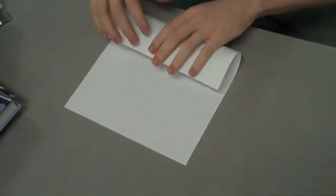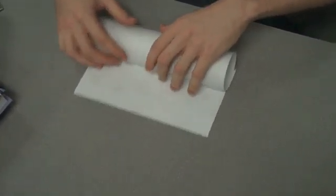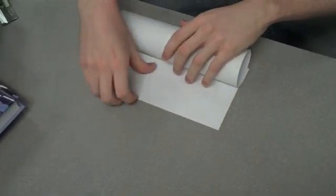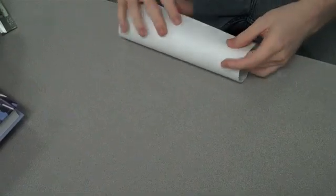So when you're rolling your paper you want to be very careful. If you get a slight crease or a slight pinch in it, that's going to be the weak spot in your tower or your bridge or whatever you're using this paper roll for.